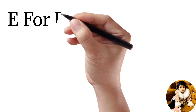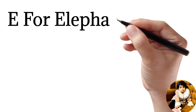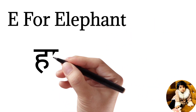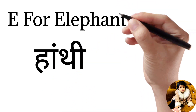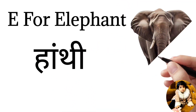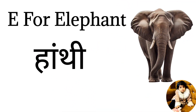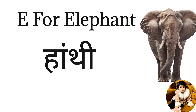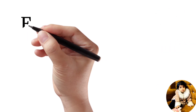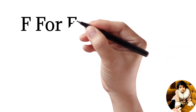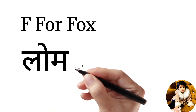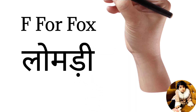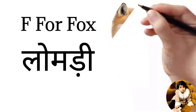E for elephant, elephant means hathi. F for fox, fox means loomri.